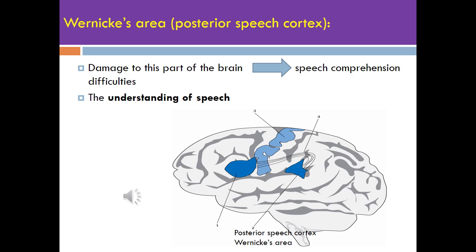The second part is called Wernicke's area. It was discovered by a German doctor. It is also called the Posterior Speech Cortex. This area in the left hemisphere of the brain is responsible for the understanding of speech.